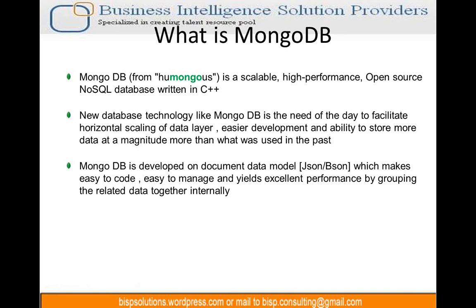Among all the NoSQL databases, why is MongoDB actually coming up? One very big reason is that all social media sites generally produce data in JSON format, and the native format in which MongoDB stores data is also JSON. So there is internal compatibility between social media sites like Facebook, Twitter, LinkedIn and MongoDB, because the native format is JSON.